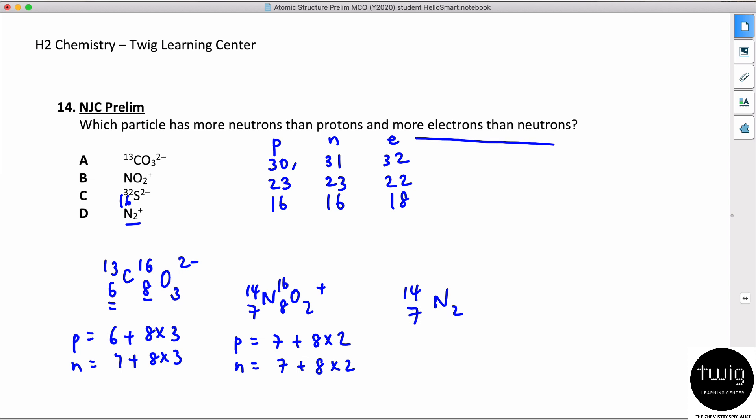So N₂⁺, we take it to be 14-7 and a plus. Number of protons all together will be 14, neutrons all together 14, and electrons - this is a plus - I think it should have 13 electrons.